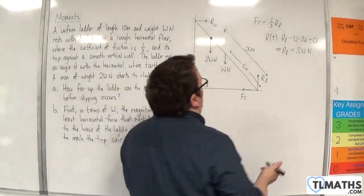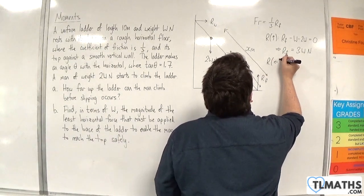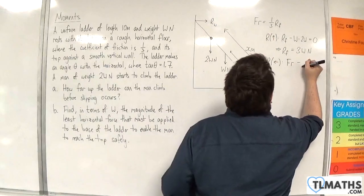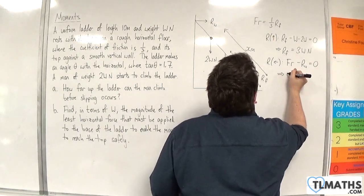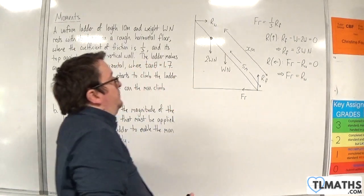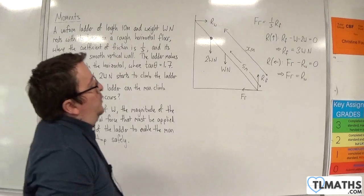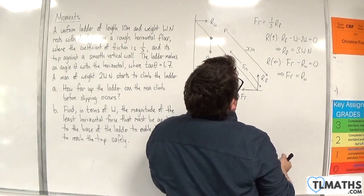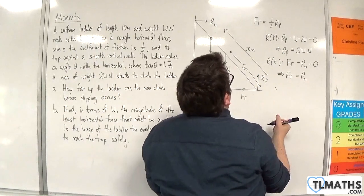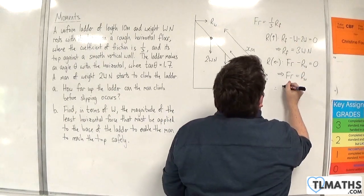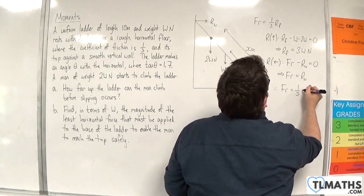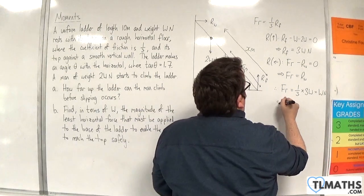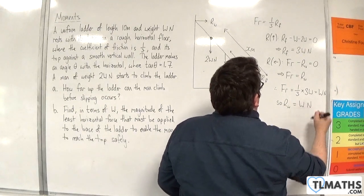Resolving horizontally, taking left as positive: F_R minus R_W equals zero, so friction equals R_W. Since friction equals one third times R_F, and R_F is 3W, we substitute to get friction equals one third times 3W, which is W Newtons. Therefore R_W also equals W Newtons. So we now have R_F equals 3W, R_W equals W, and friction equals W.